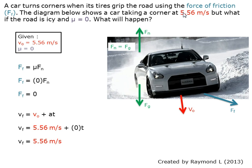The initial velocity is seen in red at 5.56 meters per second. In order to make the corner, the vehicle must produce a force of friction, shown by the blue arrow.